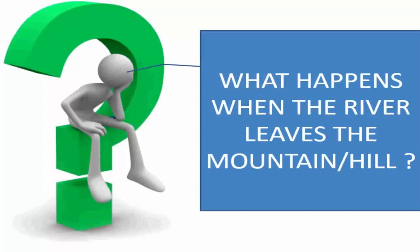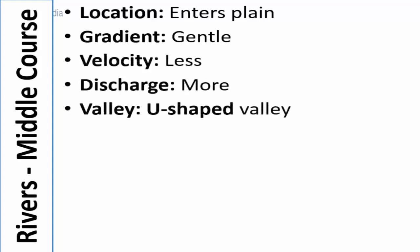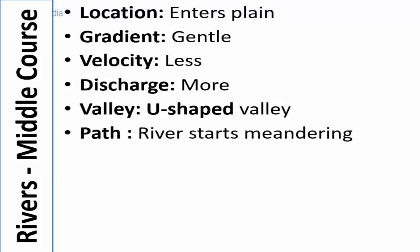The question we begin with is: what happens when the river leaves the mountain or the hill? This is where the middle course of a river begins — when it leaves the mountain and enters the plains. Here, the discharge increases but the velocity decreases as the gradient becomes very gentle. The valley begins to take a U shape and not a V shape. The path of the river is not straight; it generally is curvy and the river tends to meander.